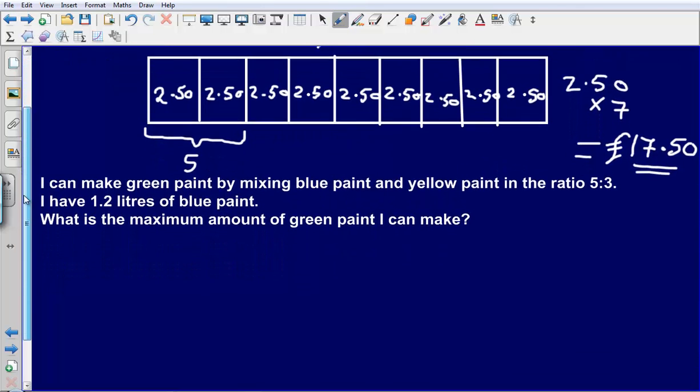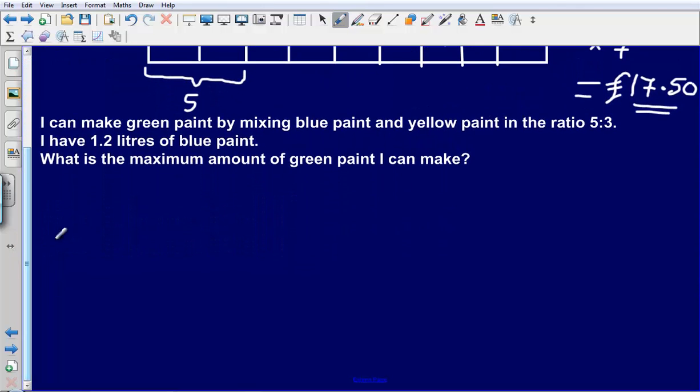Okay, let's take a look at the next one. It says that I can make green paint by mixing blue paint and yellow paint in the ratio five parts to three parts. I have 1.2 litres of blue paint. What is the maximum amount of green paint I can make?